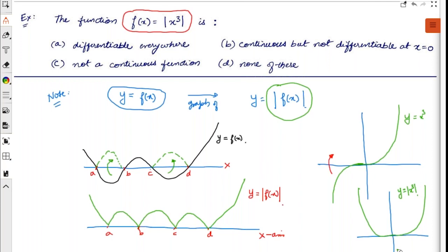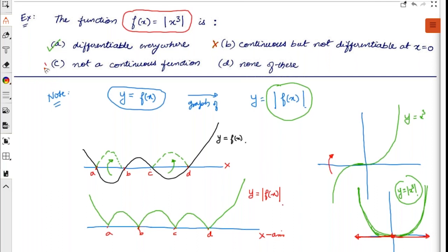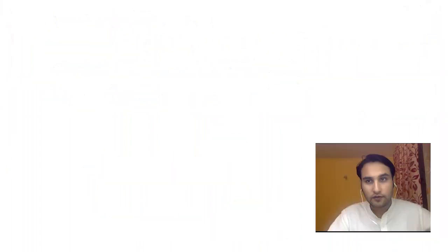If you look at y = |x³|, it is a smooth graph — differentiable everywhere. Since it is a smooth graph, it is differentiable everywhere and it is continuous. At x = 0 it is also differentiable; if you make a tangent there its slope will be zero, and there is no sharp corner. So it is differentiable at x = 0 as well. The answer is: it is continuous and differentiable everywhere.